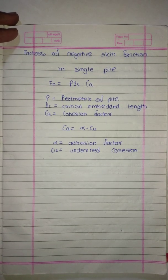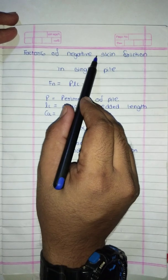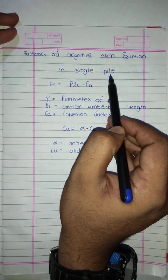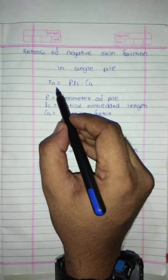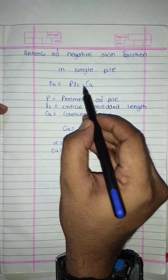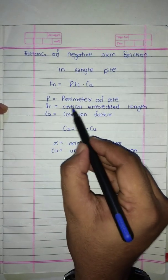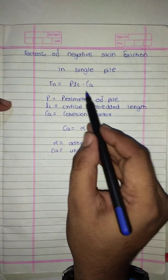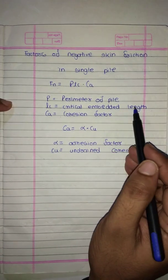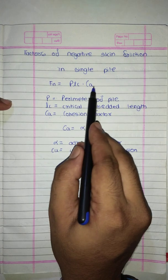If you want to find the negative skin friction for a single pile, the formula is: fn equals p multiplied by lc multiplied by ca, where p is the perimeter of the pile, lc is the critical embedded length, and ca is the cohesion factor. The critical embedded length is given in the question.